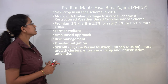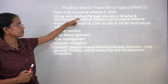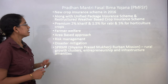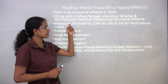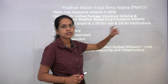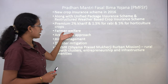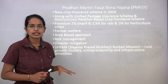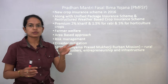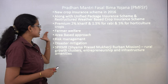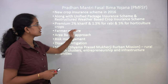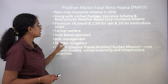Crop insurance released in 2016 has come up with a unified package insurance scheme and restructured weather-based crop insurance scheme. The premium for Kharif crops is 2 percent, for Rabi 1.5 percent, and for horticulture crops 5 percent. This is an area-based approach strategy to promote farmer welfare. Risk management and disaster mitigation are also key priorities under the insurance schemes.